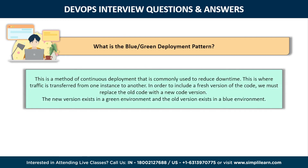The next question is: what is the blue-green deployment pattern? This is a method of continuous deployment commonly used to reduce downtime, where traffic is transferred from one instance to another. To include a fresh version of the code, we replace the old code with a new version. The new version exists in a green environment and the old version exists in a blue environment. After making changes to the previous version, we need a new instance from the old one to execute the newer version.